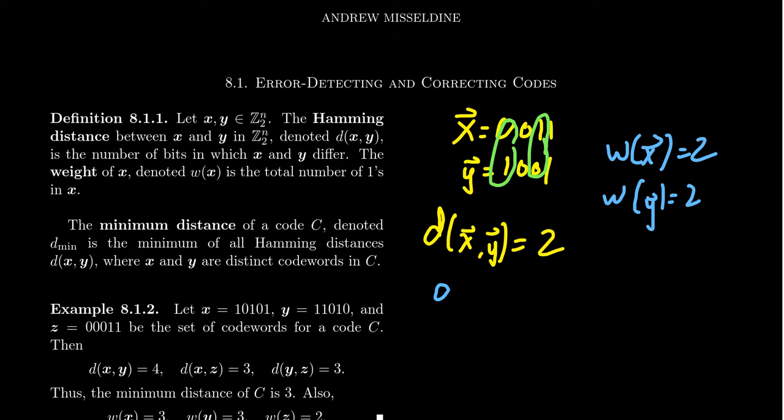So it's the smallest distance between distinct code words. Now, be aware that if you take the distance between a vector with itself, you're always going to get zero. So we are talking about distinct here. The minimum distance is the closest that two code words can be in a code.